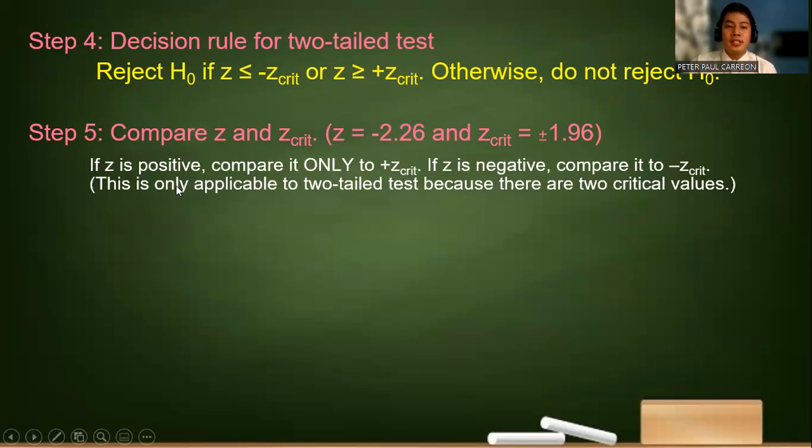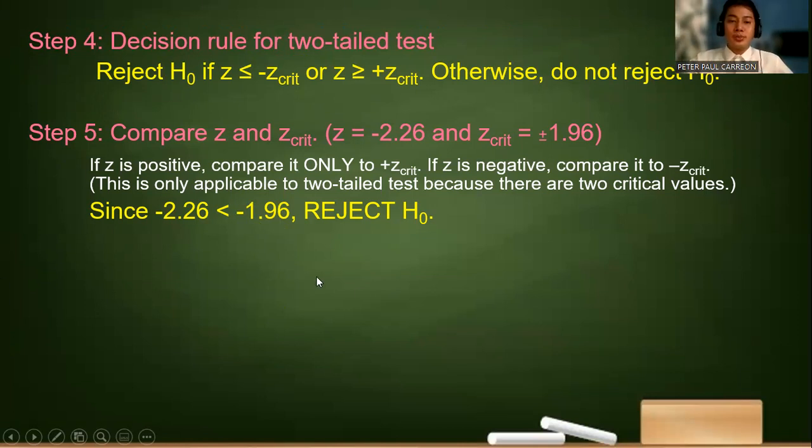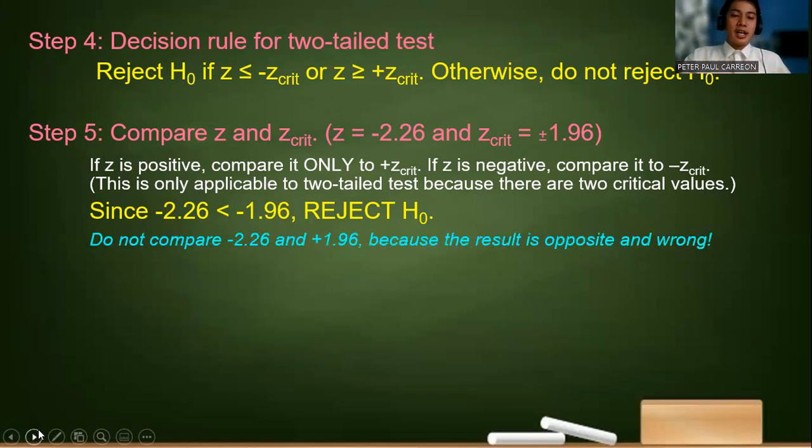Of course, since z is positive, we compare it only to the positive critical. But if your z is negative, you compare it to the negative critical. So since our computed value is negative, we will compare it to the negative critical. So we have negative 2.26. Is it less than negative 1.96? So the statement is true. Therefore, the decision is to reject the null hypothesis.